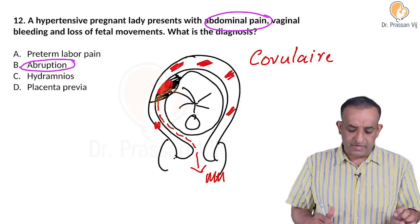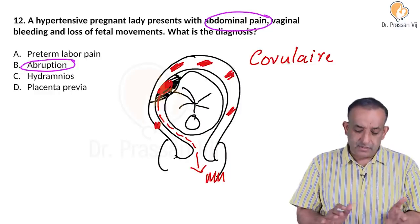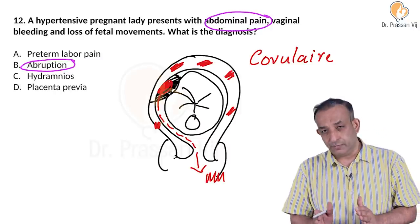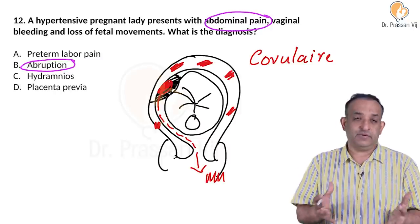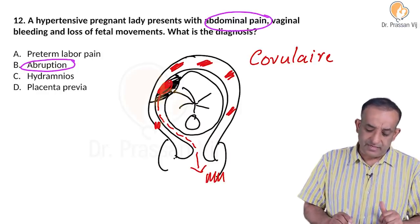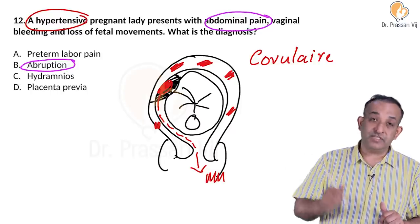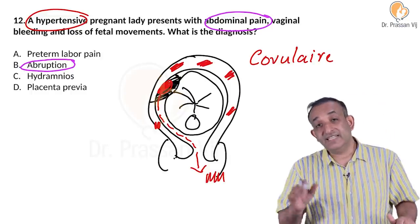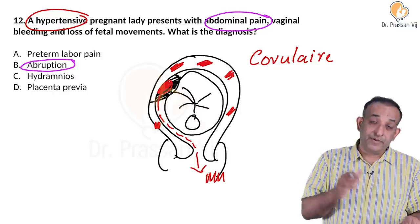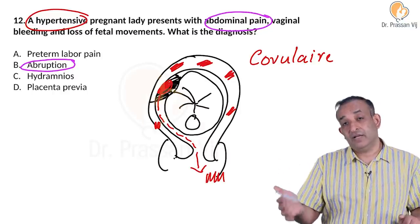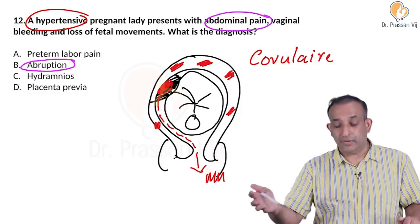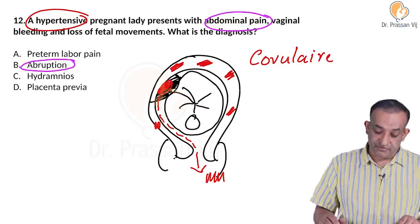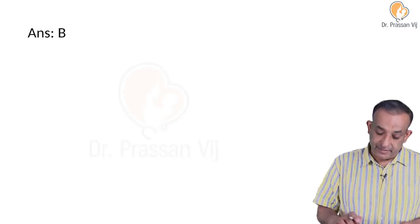Abdominal pain and tenderness on palpation, along with bleeding and loss of fetal movements with hypertension, is a giveaway diagnosis of abruption of placenta. Preterm labour would not present with loss of fetal movements. Hydramnios does not correlate with hypertension - hypertensive patients actually show oligohydramnios. Placenta previa classically has painless bleeding per vaginum. The answer to question twelve is B: abruption of placenta.